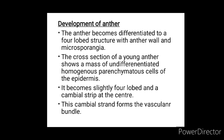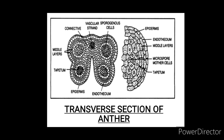The development of the anther: the anther becomes differentiated into a four-lobed structure with anther wall and microsporangia. The cross-section of a young anther shows a mass of undifferentiated homogeneous parenchymal cells and epidermis, becoming slightly four-lobed with a cambial strand at the center. This cambial strand forms the vascular bundle. It is the transverse section of anther structure.